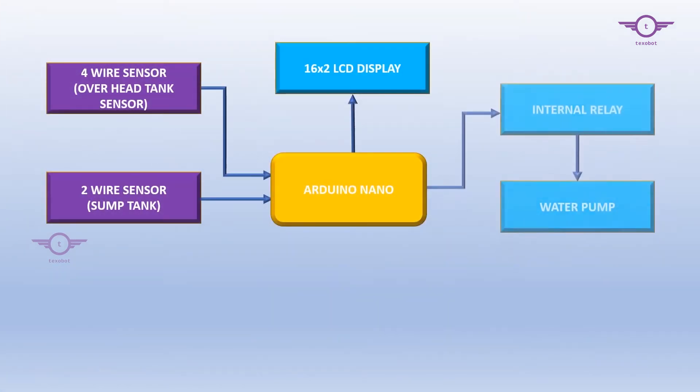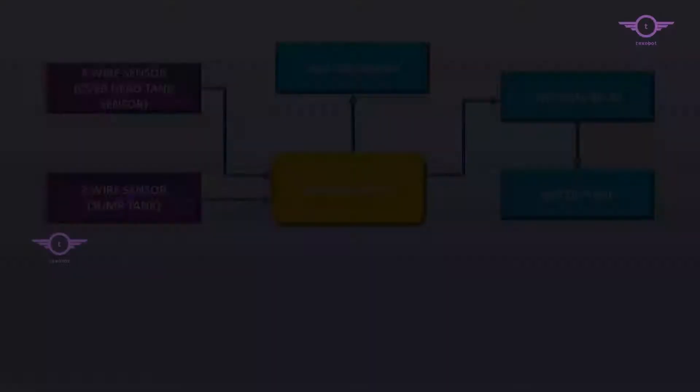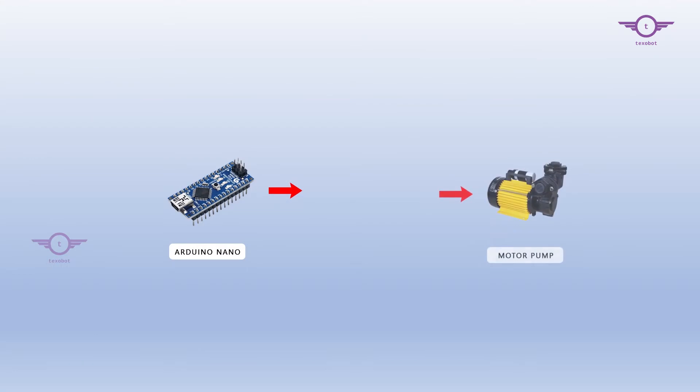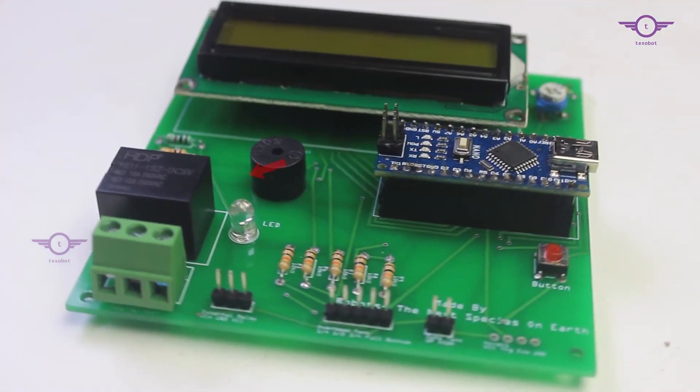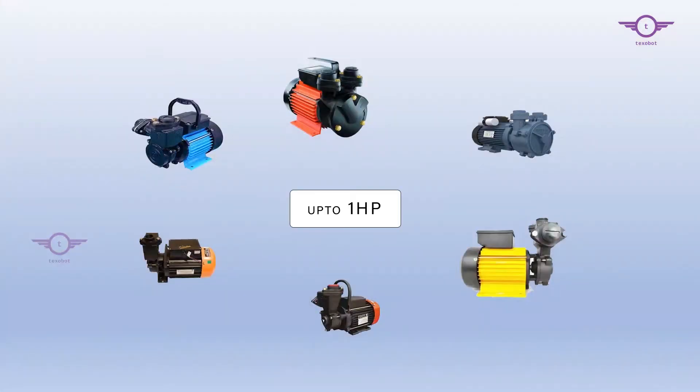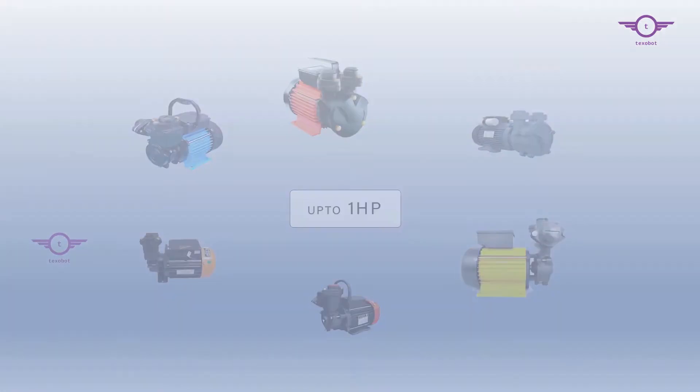The fifth block is the internal relay plus water pump. Arduino will control the water pump using the internal relay. The relay present on the circuit can be used to start up to one HP single phase water pump without starters.